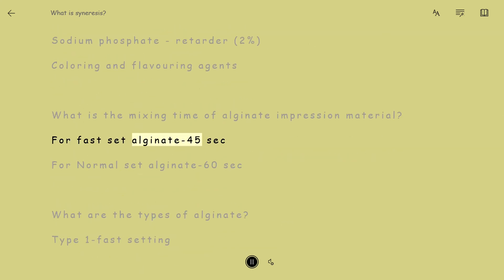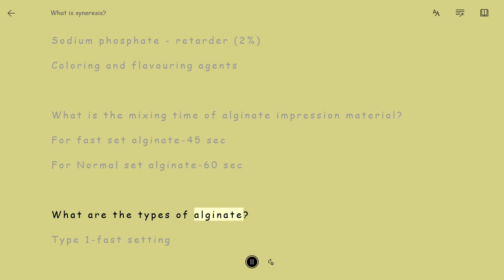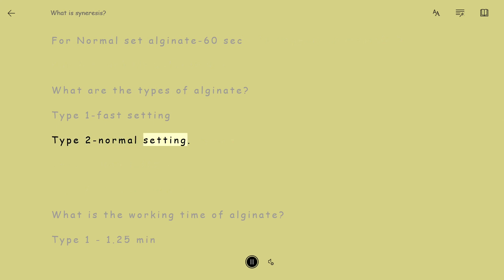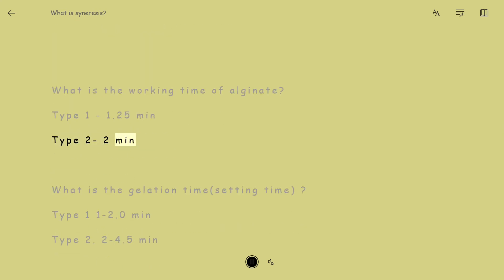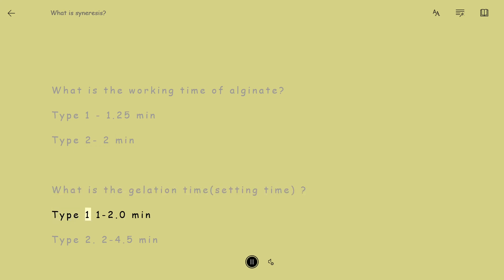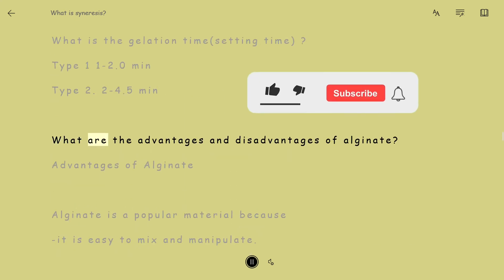What is the mixing time of Alginate Impression Material? For Fast Set Alginate – 45 seconds. For Normal Set Alginate – 60 seconds. Types of Alginate: Type 1 – Fast Setting; Type 2 – Normal Setting. Working time: Type 1 – 1 to 1.25 min; Type 2 – up to 2 min. Gelation/Setting time: Type 1 – 1 to 2.0 min; Type 2 – 2 to 4.5 min.